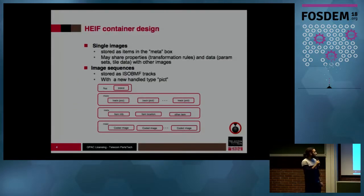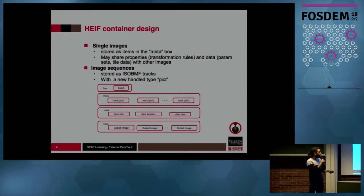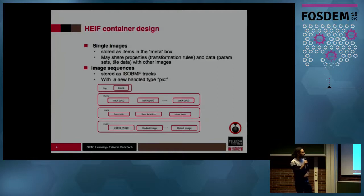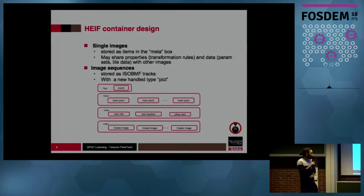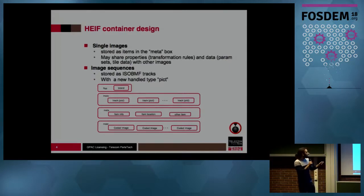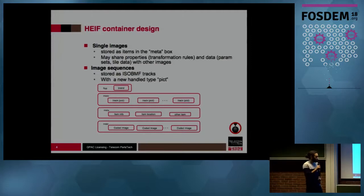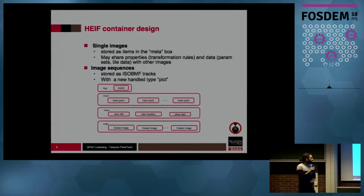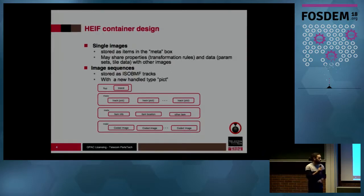The design of the HEIF container is based on the ISO BMFF construct, which is also supported by JPEG. For a single image, you can store it as an item in the meta box. You can also share properties like transformation rules and data like parameter sets and tile data with other images. You can also store image sequences as a usual track, but with the new handler type called PICT.